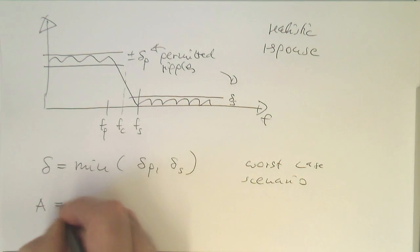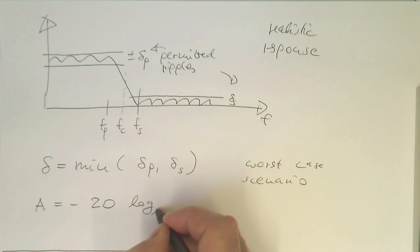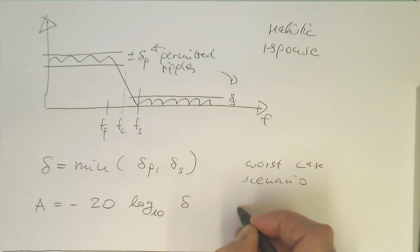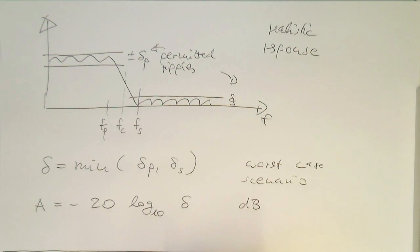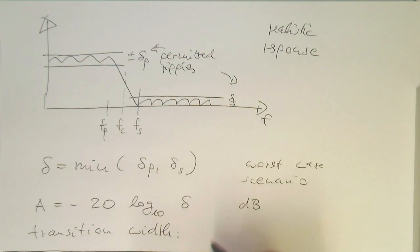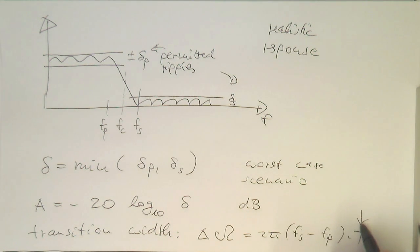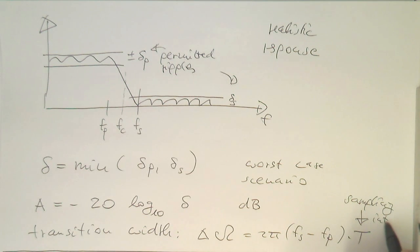As the next step, we convert this into decibel. Then what we do is define our transition width. The transition width is defined as delta omega equals 2π times (FS minus FP) multiplied by T, where T is our sampling interval. Once we have defined that, with these parameters we can now calculate the number of taps required for this filter.